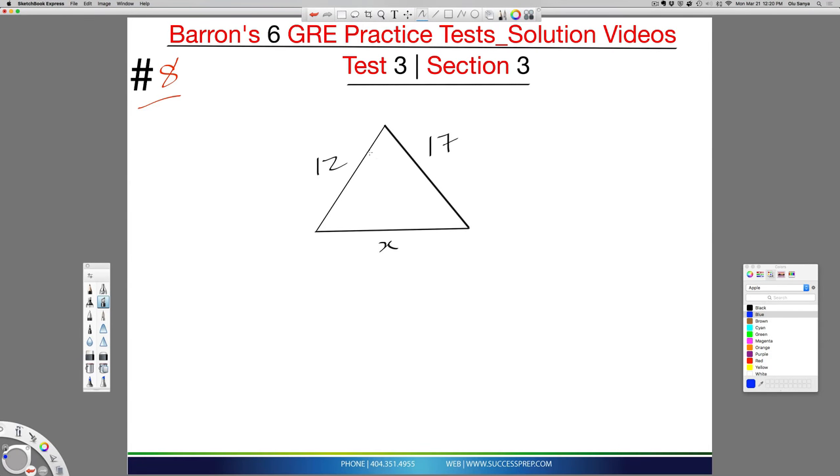For problem number eight, we have a triangle rule to use here. If you have a triangle, not a right triangle but a regular triangle, and you know two sides and need to find the third side, you cannot use the Pythagorean theorem because it's not a right triangle.